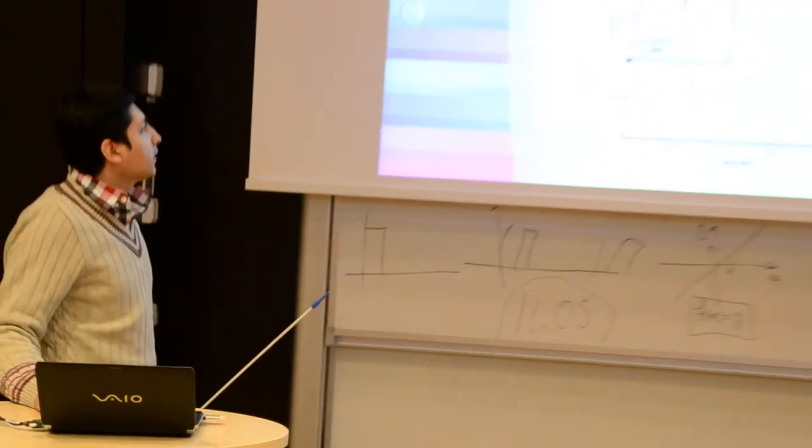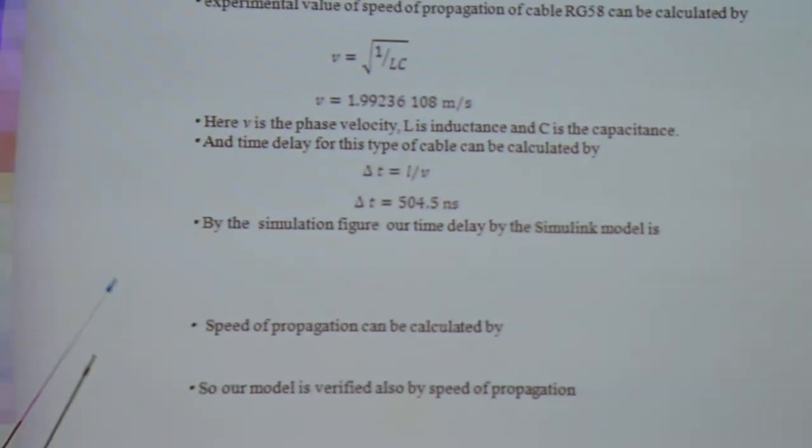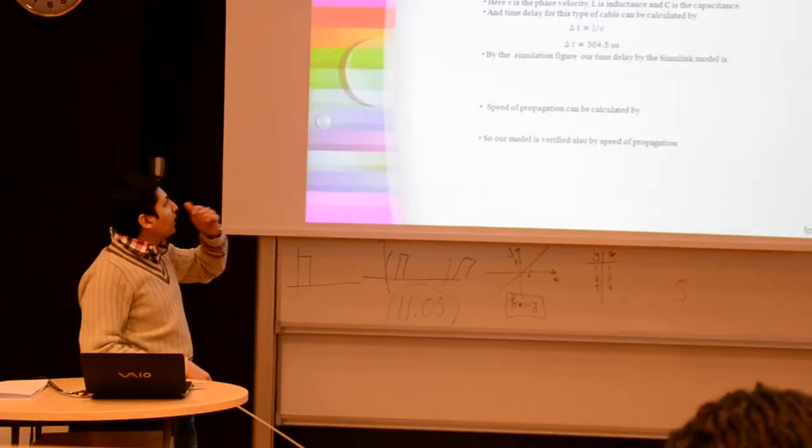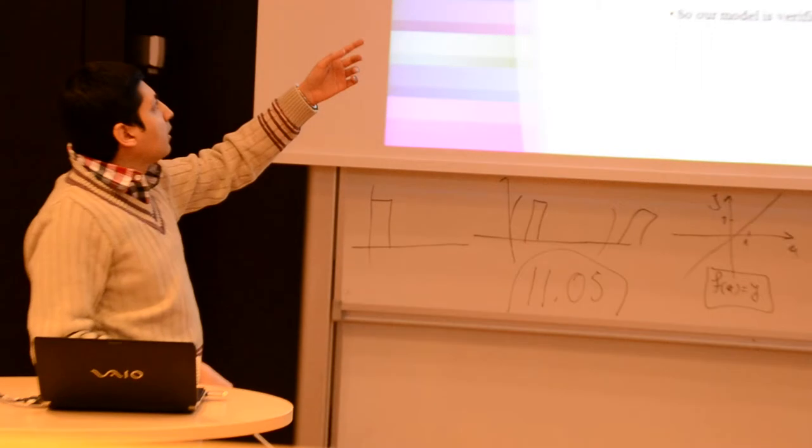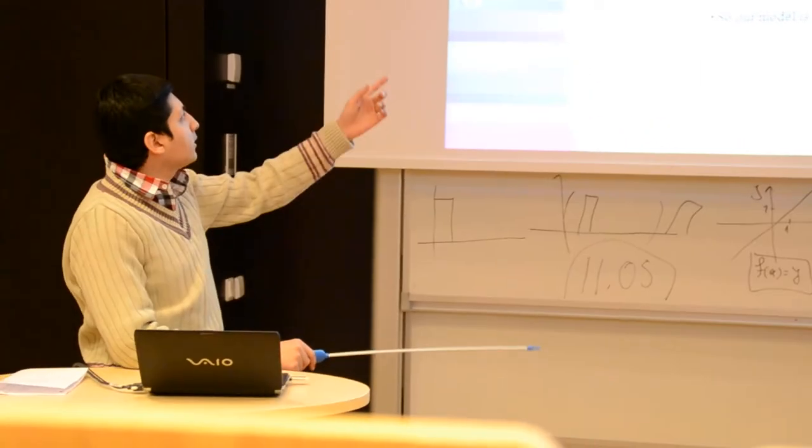And here you can see we get, for the experimental part, we get the velocity. We use the formula, v equals square root of 1 over LC. And here we get, for velocity, we get 1.9936.